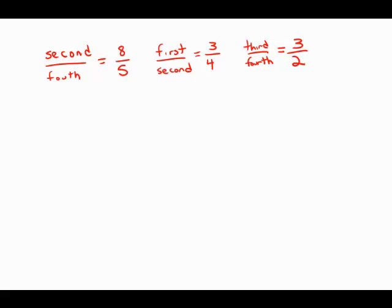At a certain school, the ratio of the number of second graders to the number of fourth graders is 8 to 5, and the ratio of the number of first graders to the number of second graders is 3 to 4. If the ratio of the number of third graders to the number of fourth graders is 3 to 2, what is the ratio of the number of first graders to the number of third graders?